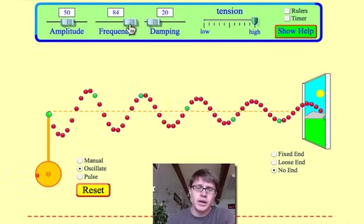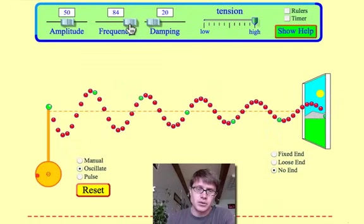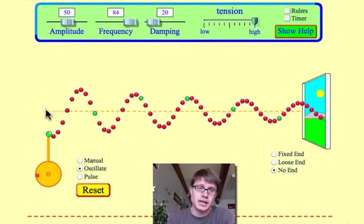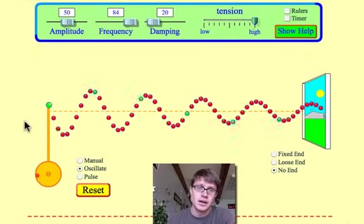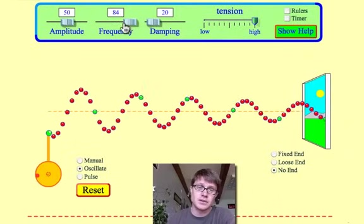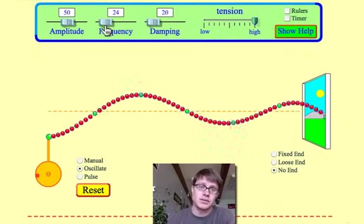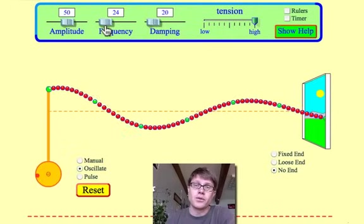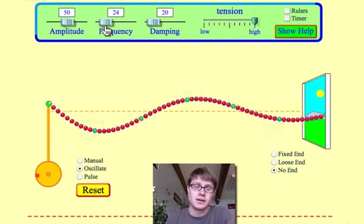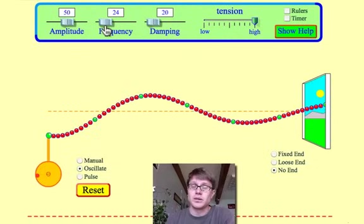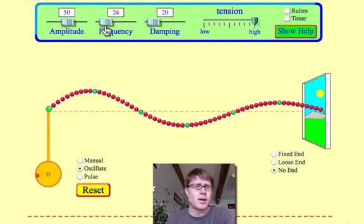What happened to the wavelength when I did that though? Well as I increase the frequency, I decrease the wavelength. So let's go back here. What happens when I decrease the frequency? So now it's only 24 waves a second. Now the wavelength gets really, really longer. So what do we remember?